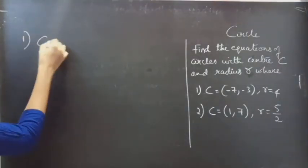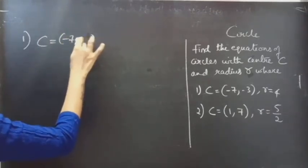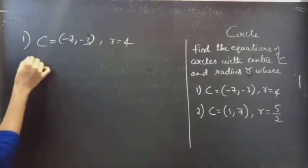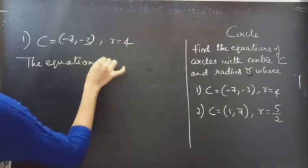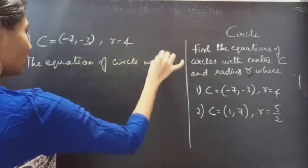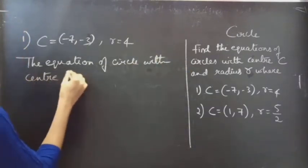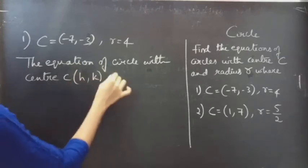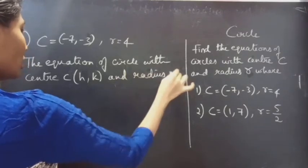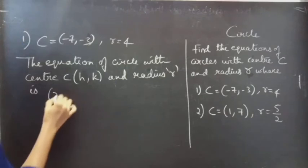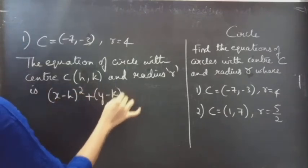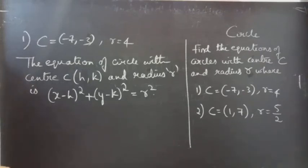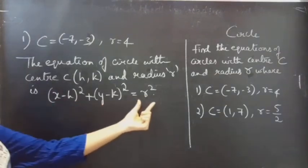First one, we are given center minus 7 comma minus 3 and radius 4. We know that the equation of a circle with center C at (H, K) and radius R is given by: X minus H whole square plus Y minus K whole square equals R square.